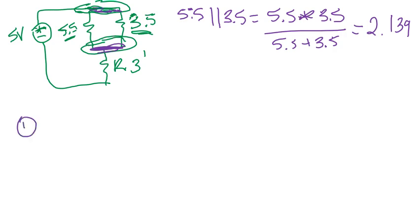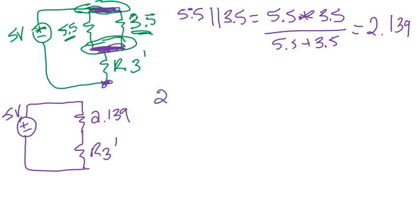So now my circuit looks this way. Replace that parallel combination with my single resistor that is just 2.139 ohms. Still have R3 prime. So now how are those resistors related? They are in series. So I can combine them in series by adding. So 2.139 plus R3 prime, which was 0.75, and that gets me 2.89 ohms.